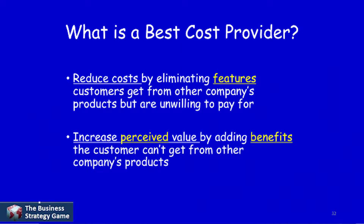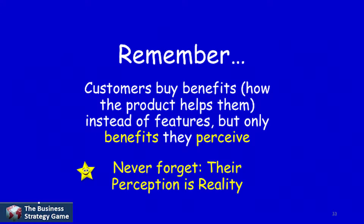Best Cost Provider tries to reduce costs by eliminating features that customers get from other companies' products but are really unwilling to pay for, that they really don't want to have. And at the same time, increasing the value by adding benefits that the customer can't get from other companies' products. Now one thing we ought to point out here: customers don't buy features, they buy benefits. And this benefit is how the product will help them, why they're better off using the product than not using it.